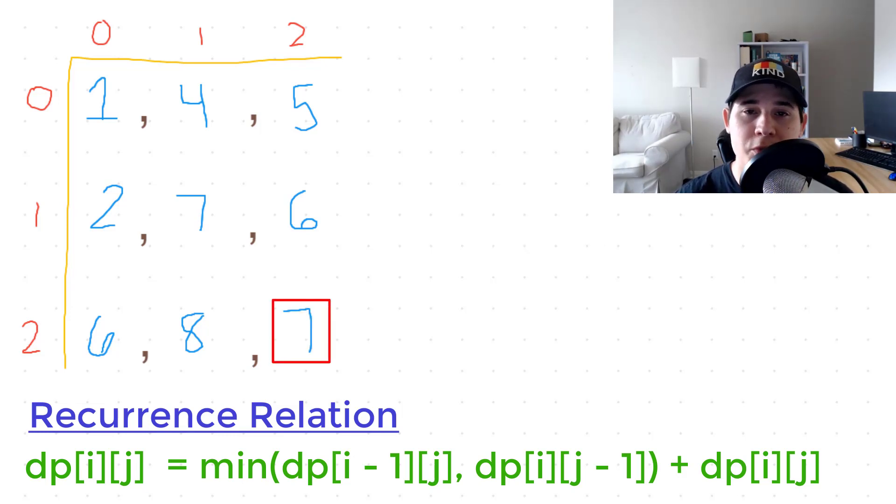That would be the number that we return from our function. And something you may have noticed is, since this is dynamic programming, we have computed the minimum path sum at every single position inside of our grid. We started with position (0, 0), which was our base case. And we looped through every single element in our grid, finding the minimum path sum at every position until we get to the element that we cared about, which was at the very bottom right.